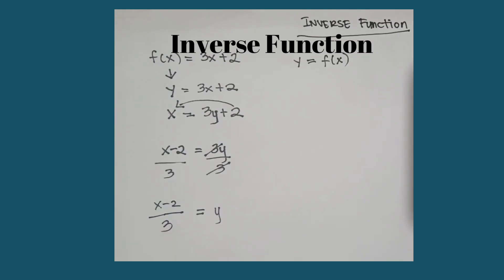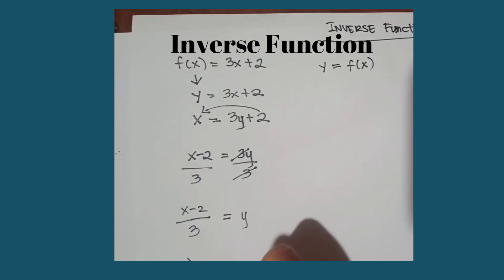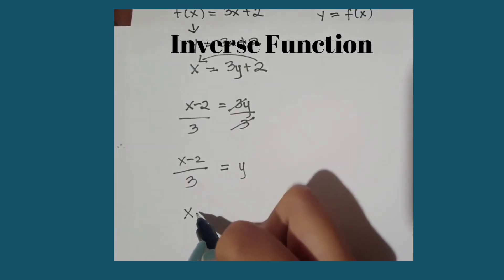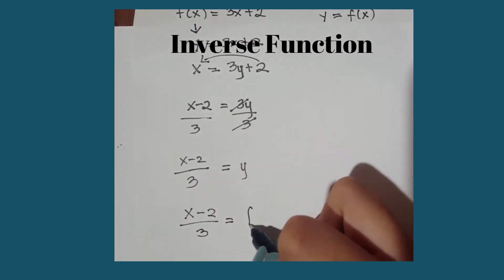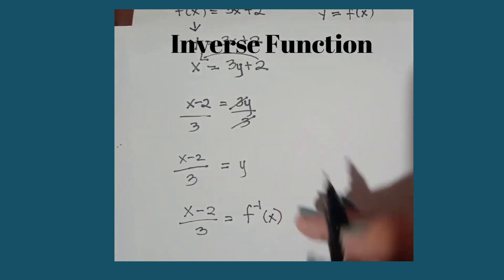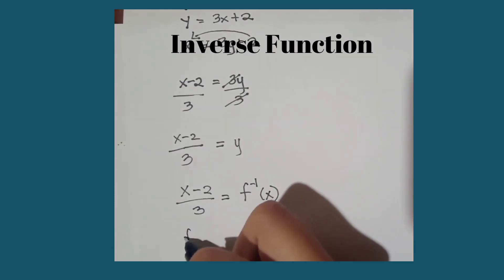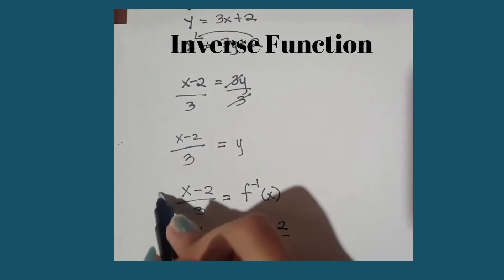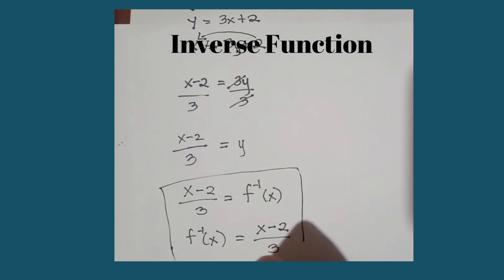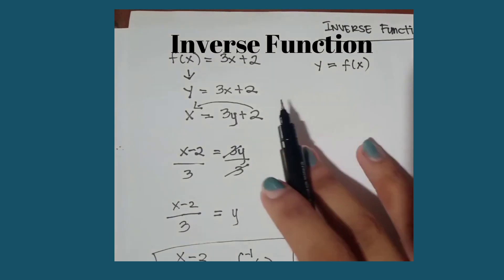Now we are going to replace y by f inverse of x. So x minus 2 over 3 is equal to f inverse of x. Or we could reverse it into f inverse of x is equal to x minus 2 over 3. So now we have the inverse function of the given problem f(x) is equal to 3x plus 2.